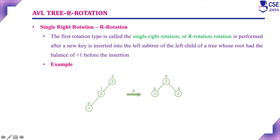The first rotation is OR rotation, or single right rotation. Whenever you are inserting a new key into the left subtree — for example, here already two nodes are there, three and two — and one you are newly inserting as a left subtree of the left child. After insertion, if the root node is unbalanced, you have to implement a single right rotation.